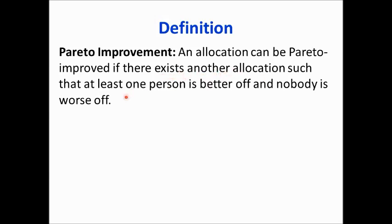But if there exists another allocation, it must satisfy two properties to qualify as a Pareto improvement. The first property is that at least one person is better off, and the second condition is that nobody is worse off. These are the two conditions we require from the other allocation that Pareto improves this allocation.